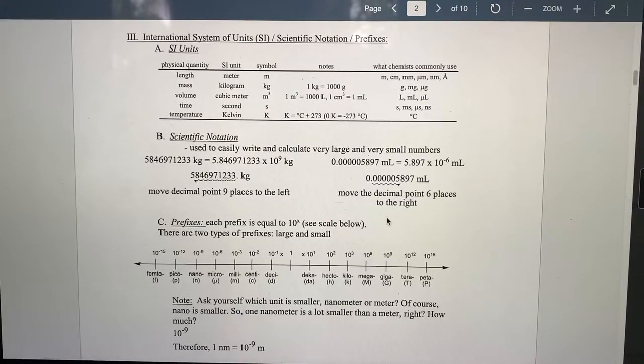Moving on to SI unit, which is standard international units. These are the quantity that we have to measure, and these are the standard units. For example, length, meter is the standard units of length. Mass, kilogram is standard units of mass. Cubic meter is the standard units of volume, and one cubic meter is equal to a thousand liters.